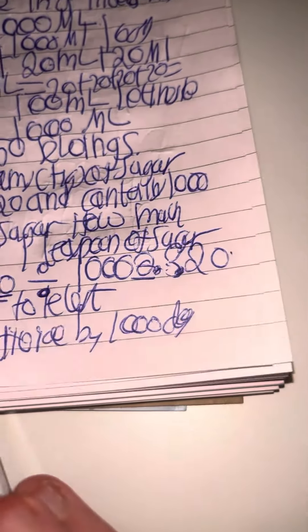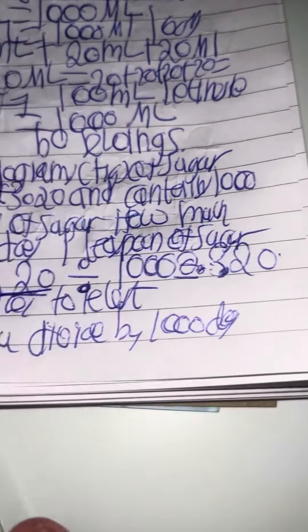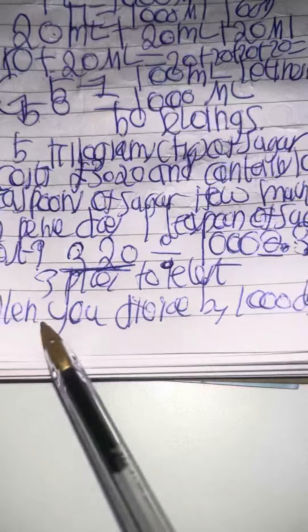How much in pence does one teaspoon of sugar cost? So three pound 20 divided by a thousand equals 3. When you divide by a thousand, the decimal point moves three places to the left, so it's just going to be 0.32, technically 32 pence.